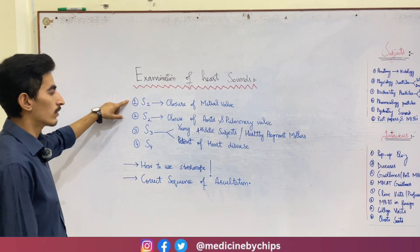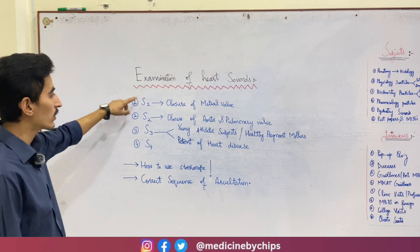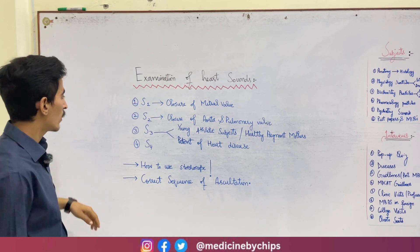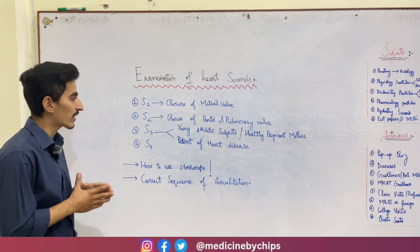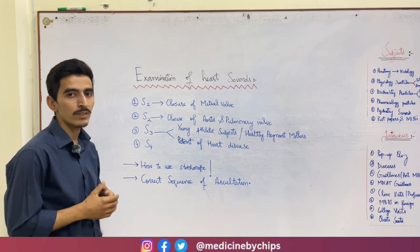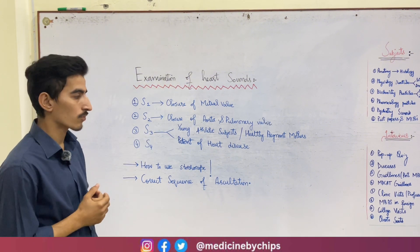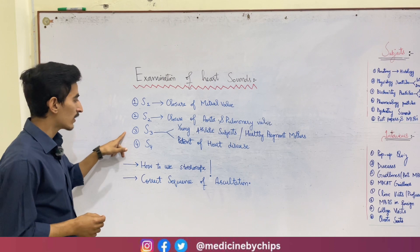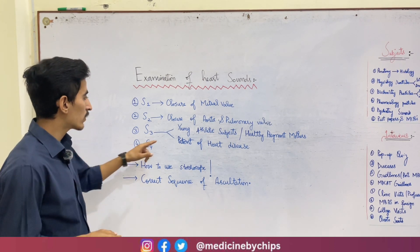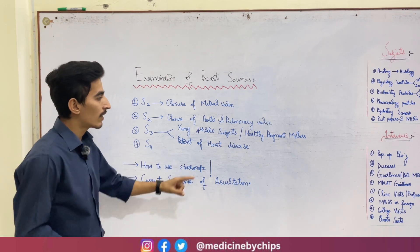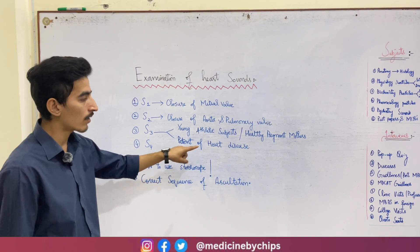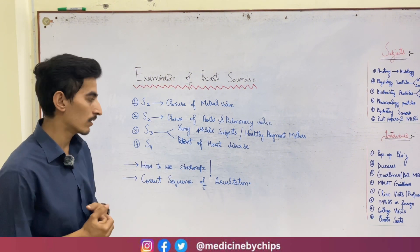First of all we have S1. S1 is produced due to the closure of the mitral valve at the beginning of ventricular systole. Then there is S2, the second heart sound, produced due to the closure of the aortic and pulmonary valves at the end of ventricular systole. Then there is S3, the third heart sound. It is a lower pitch sound and is often heard in young athletic subjects and healthy pregnant mothers, and can also be heard in patients with heart disease, for example heart failure.